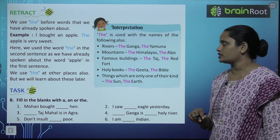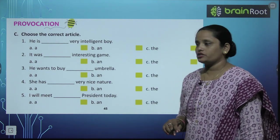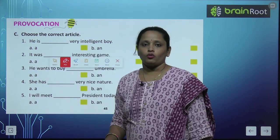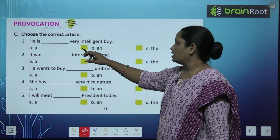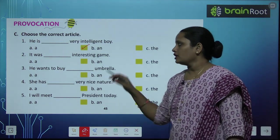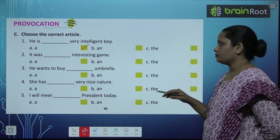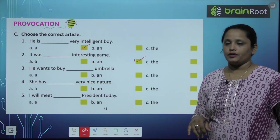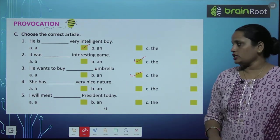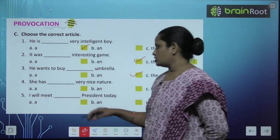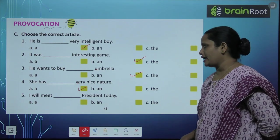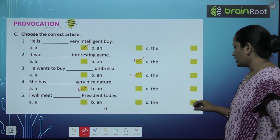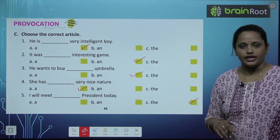Now let's move on to Exercise C — choose the correct articles. 'He is ___ very intelligent boy' — He is a very intelligent boy. 'It was ___ interesting game' — an interesting game. 'He wants to buy ___ umbrella' — umbrella mein 'u' hai, so an umbrella. 'She has ___ very nice nature' — a very nice nature. 'I will meet ___ president today' — president ek hi hota hai, toh the president.